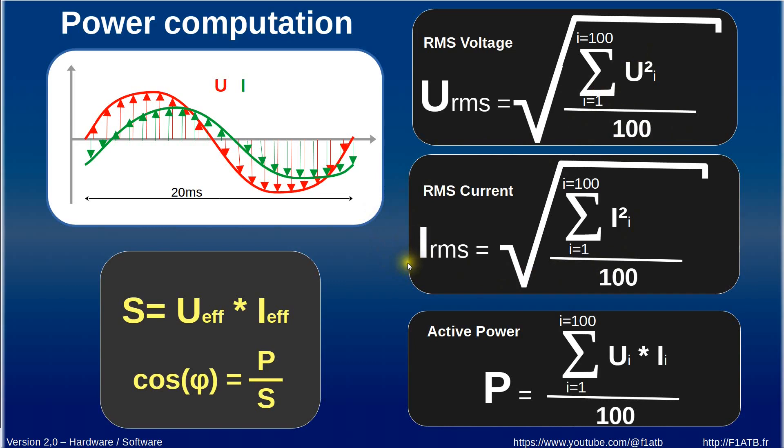The same formula for the current and for the power, the active power, so the power which is really produced for example heat in our system, all the time we have to make the product on each sample between the voltage and the current and take at the end as a mean value and this is the active power of the system.